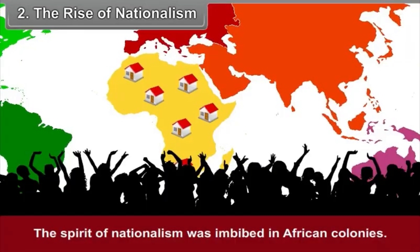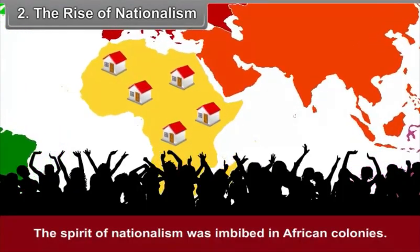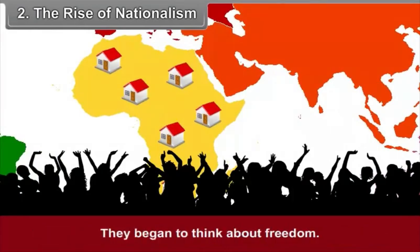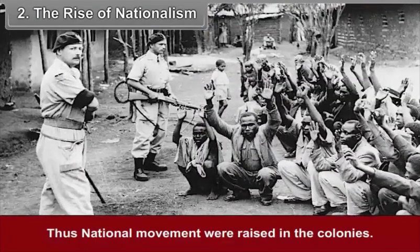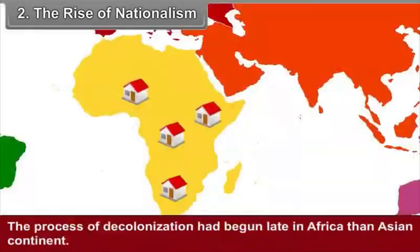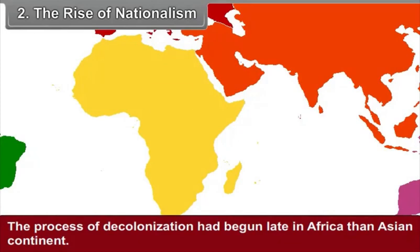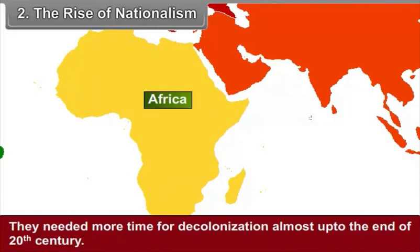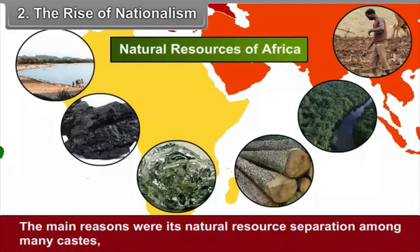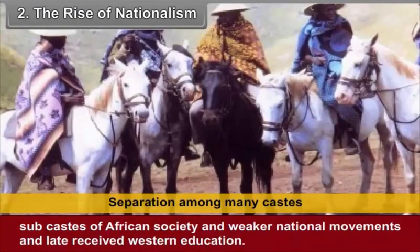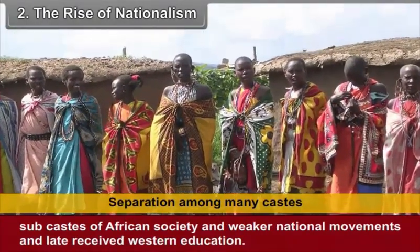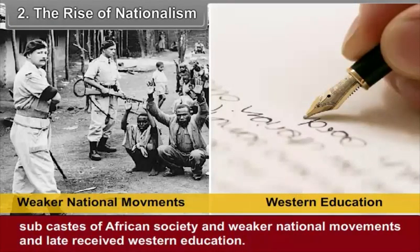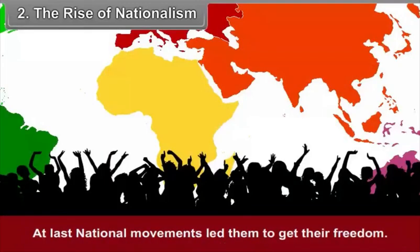Second, the rise of nationalism. The spirit of nationalism was imbibed in African colonies and they began to think about freedom. Thus, national movements were raised in the colonies. The process of decolonization began later in Africa than in the Asian continent. They needed more time for decolonization, almost up to the end of the 20th century. The main reasons were Africa's natural resources, separation among many castes and sub-castes of African society, weaker national movements, and late reception of Western education. At last, national movements led them to get their freedom.